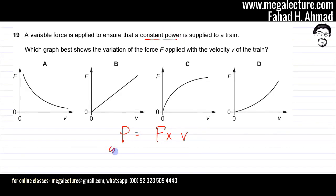What we are trying to do is apply a constant power. The velocity of the train is going to constantly increase. If the velocity of the train is constantly increasing, then the force must decrease so that the product remains constant.